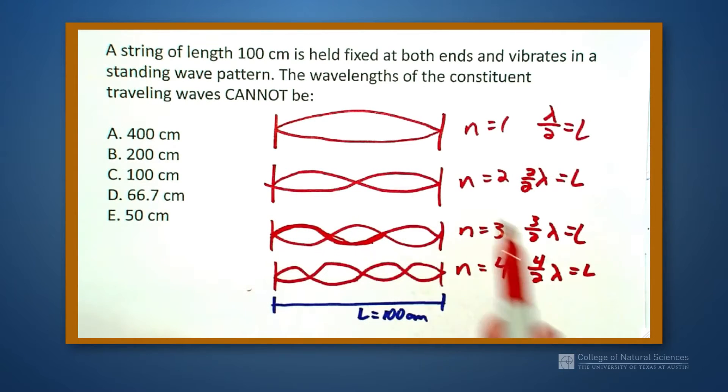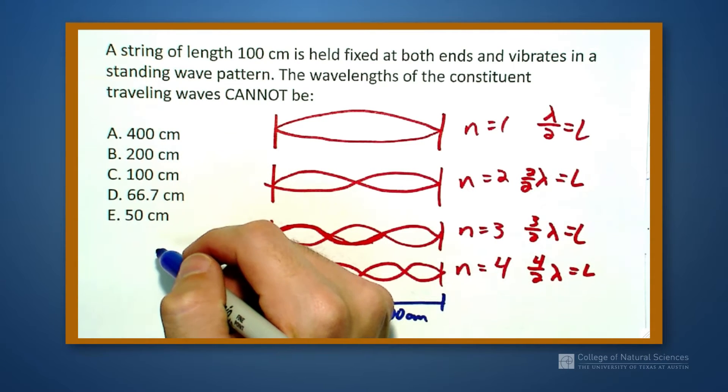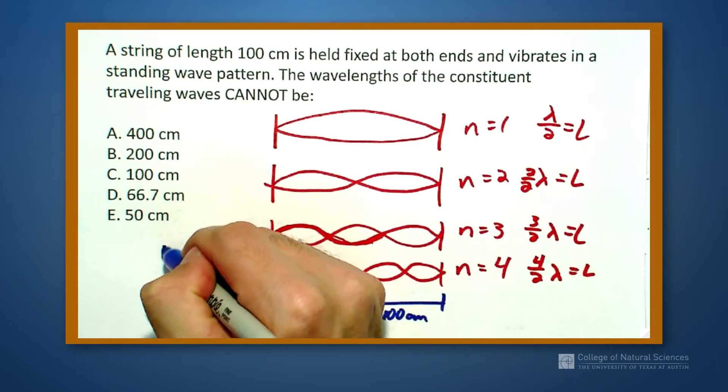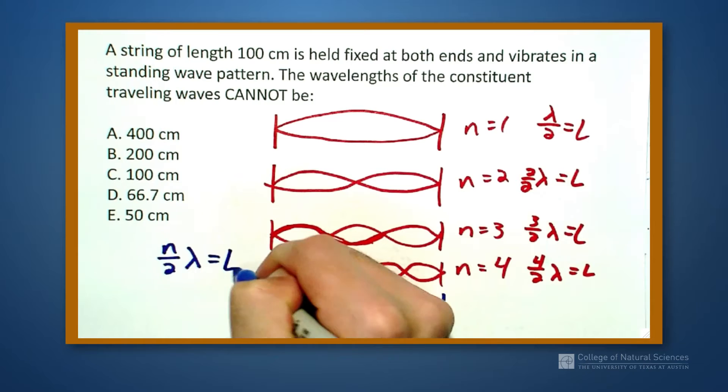So I see that I have this pattern that emerges and the pattern that I have that emerges is that I have n divided by 2 times lambda is equal to L.